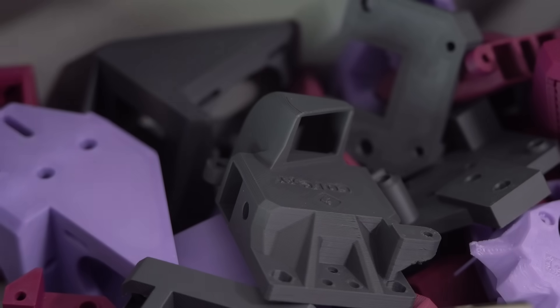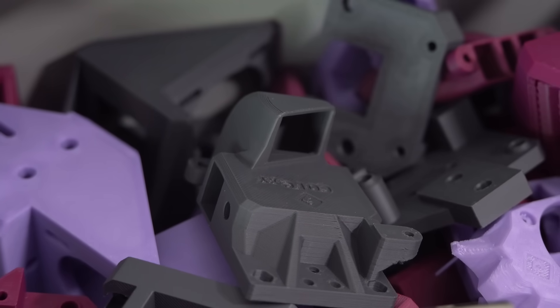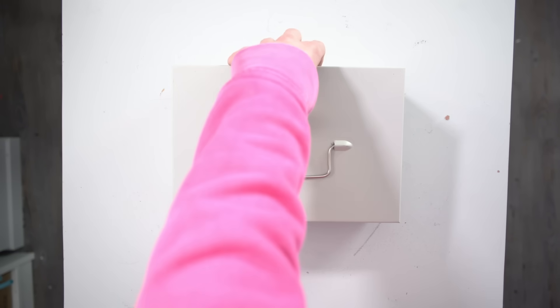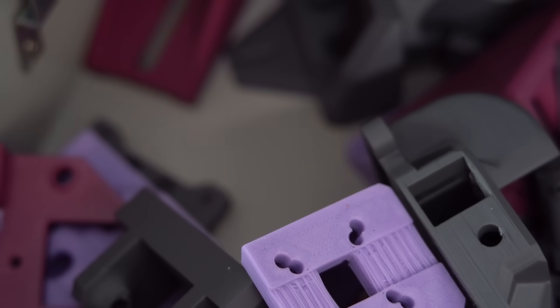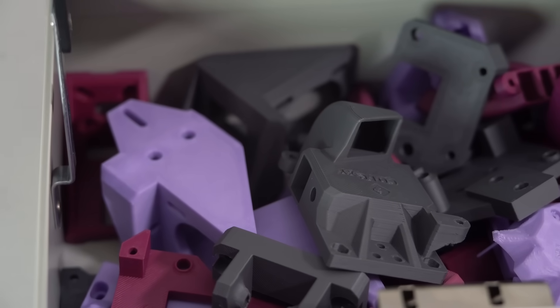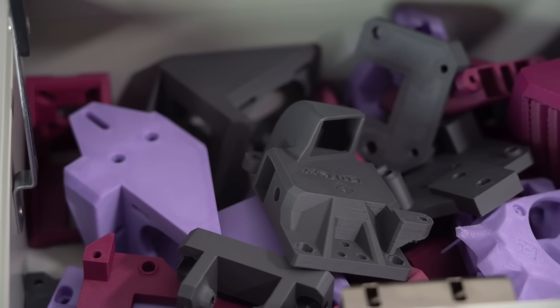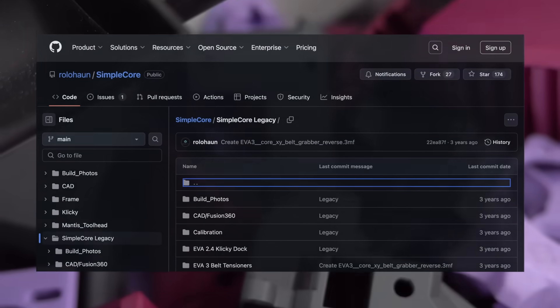Before we start building, you will need to print all of the required parts. Thankfully, there aren't that many. Everything you need fits comfortably inside of this box right here. I chose to print mine out of ABS from Matter3D, a local Canadian company, and I think they look fantastic. You don't need to use ABS though. PLA or PETG is just fine, as long as you aren't enclosing the printer. All the files you need to print are available on Rolahan's GitHub, and there's a link to that in the video description.